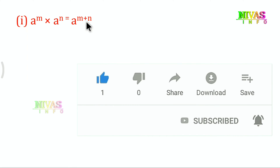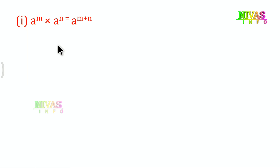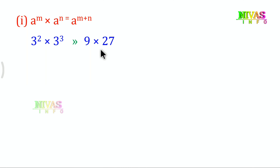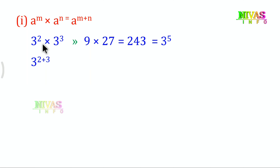For example, 3 power of 2 multiplied by 3 power of 3 is equal to 3 power of 5. We verify: 3^2 is 9, 3^3 is 27, and 9 into 27 is 243. And 3^5 is also 243. Here the base is the same and the exponents are different, so the exponents are added.